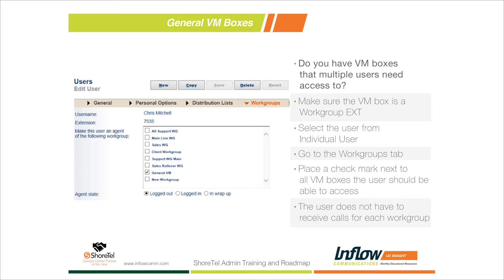Once the workgroup mailbox is built, we log back into ShoreTel Director, go to Users, then Individual Users, and select the user we want to be able to check that voicemail — in this case I selected myself. At the top, I went over to the Workgroups tab. Most people are familiar with the General tab for username and extension, and the Personal Options tab for headset and call handling settings. On the Workgroups tab, I can simply check any workgroups I want the user to have access to, and they'll be able to see those voicemails inside Communicator.